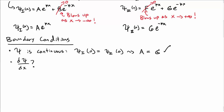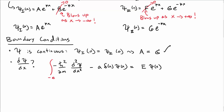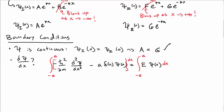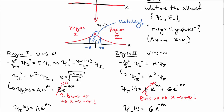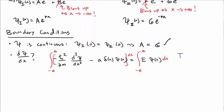What about the derivative of the wave function? This isn't going to be continuous because we've got something funky going on at x equal to 0 with the delta function potential. So let's write out the Schrödinger equation: the second derivative minus A times delta of x times psi of x equals E times psi of x. To figure out the conditions on the derivative, we're going to integrate both sides over dx from negative epsilon to epsilon around x equal to 0, and then let epsilon go to 0.